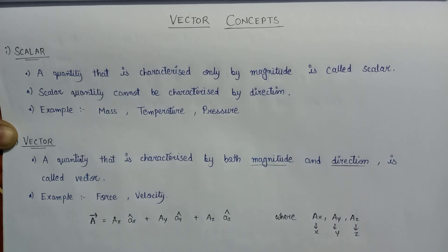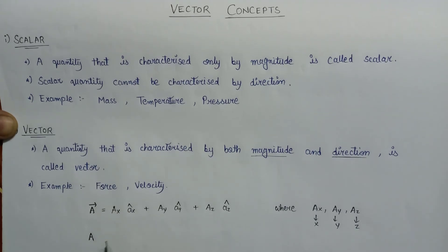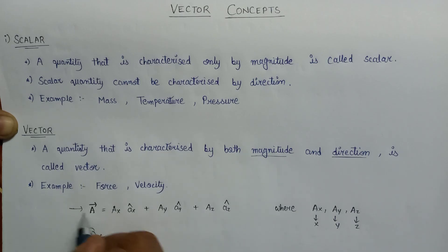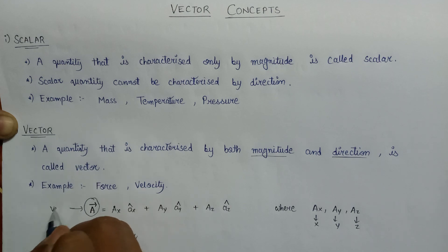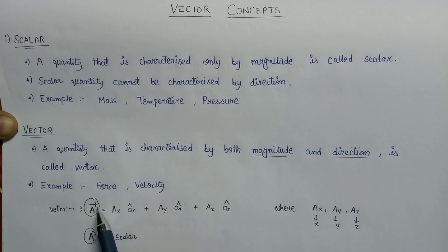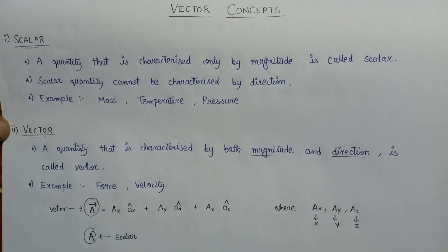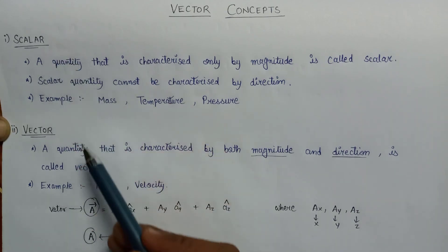For a scalar quantity, it is represented simply by a symbol or letter — it does not require any arrow over the top of it. This distinguishes it from a vector quantity, which has an arrow over the top. This is the basic introduction to the two types of quantities: scalar quantity and vector quantity.